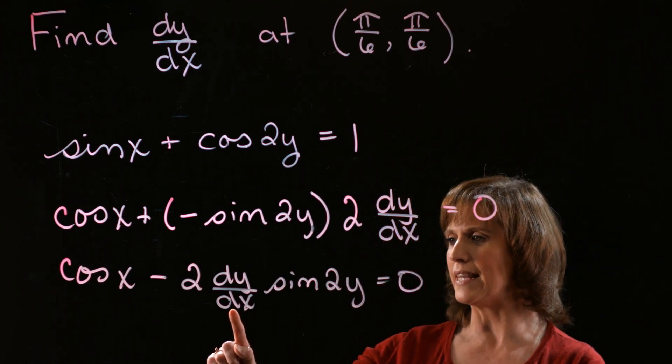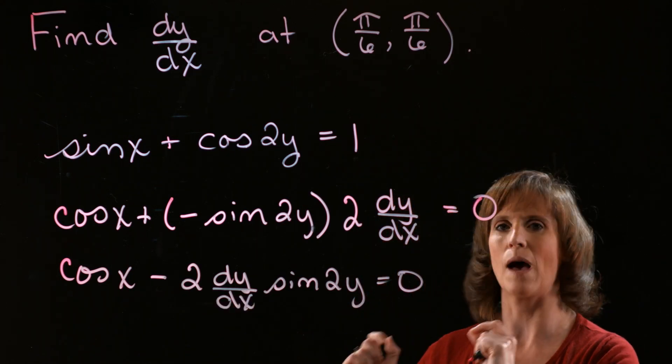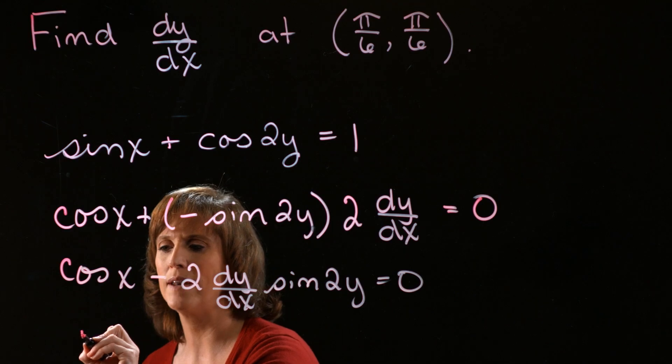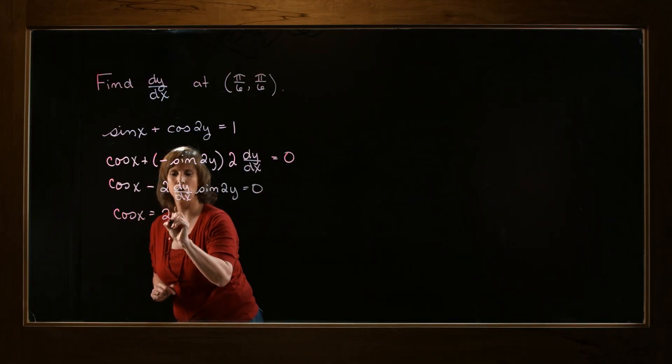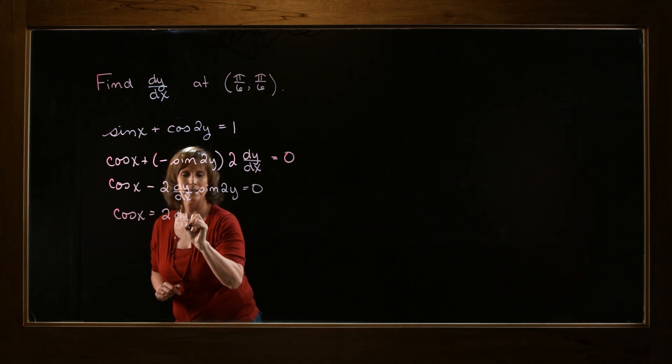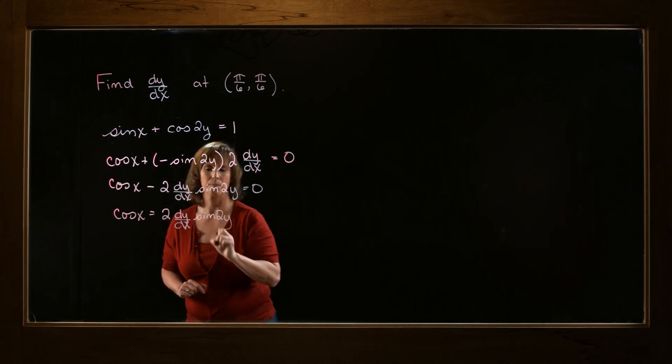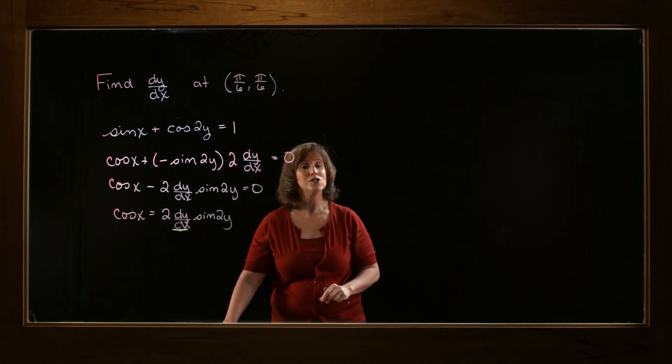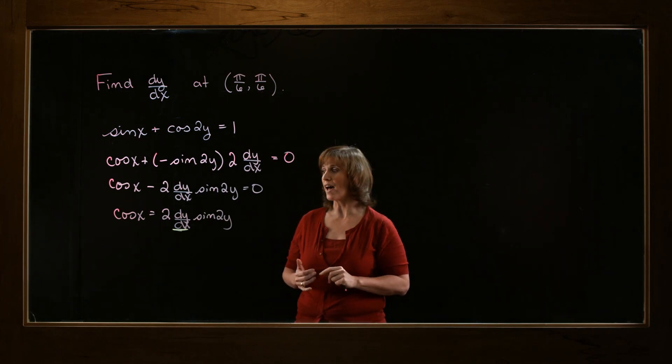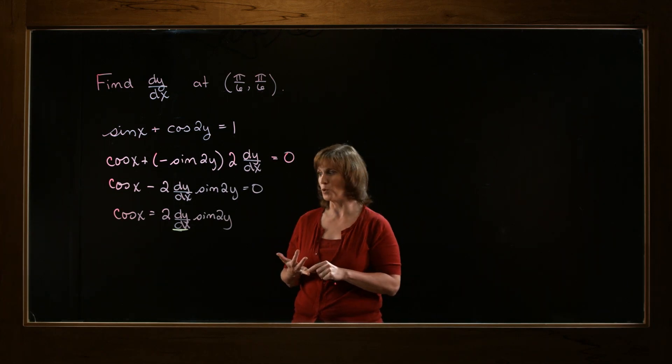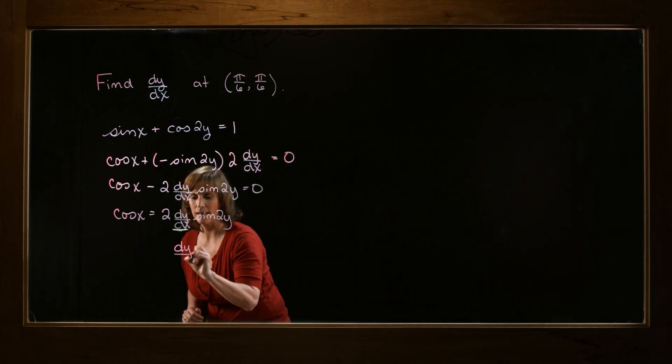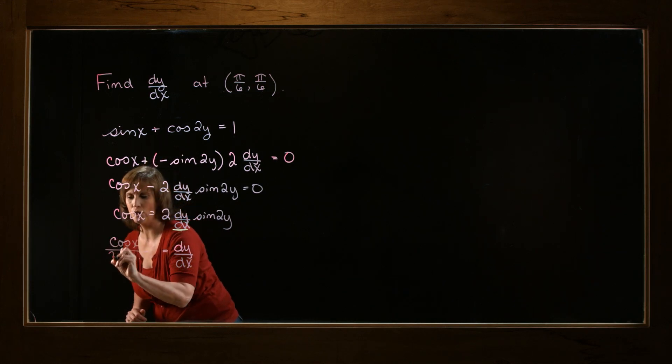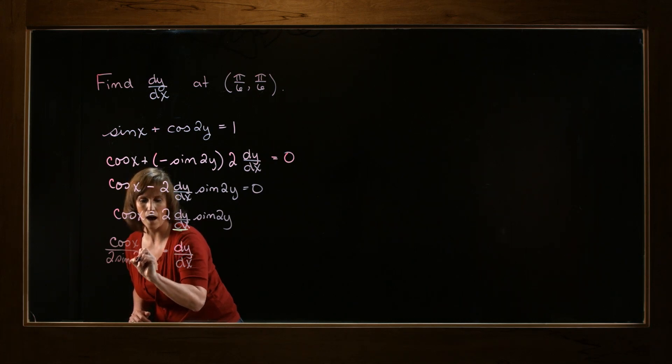And now I want to get this second term, because it's the only one with the dy/dx, I want to get it isolated on one side. I think it's going to be easiest to move it to the right-hand side. So I'm going to have cosine of x equals 2 times dy/dx times the sine of 2y. Now what I want to do is isolate that dy/dx. So I can accomplish this by dividing both sides by 2 and by the sine of 2y. So dy/dx is going to equal the cosine of x divided by 2 times the sine of 2y.